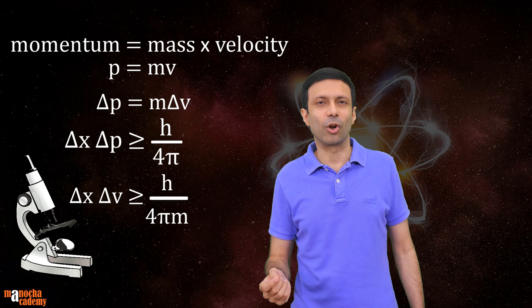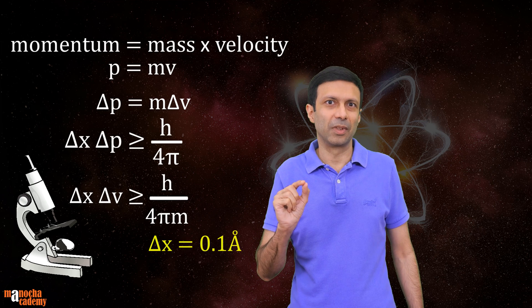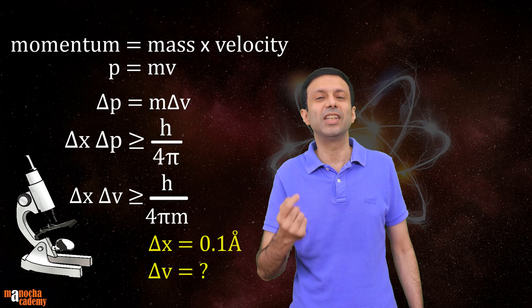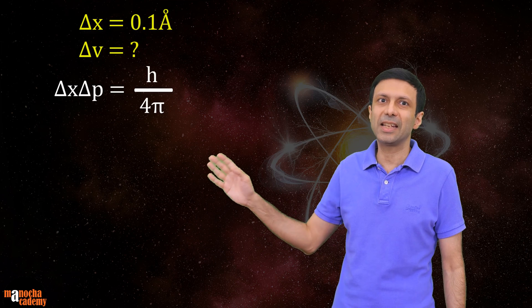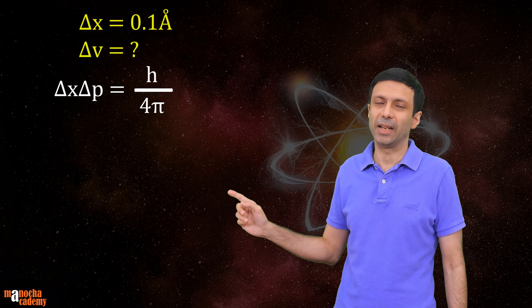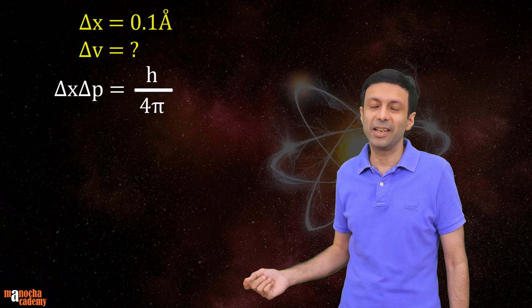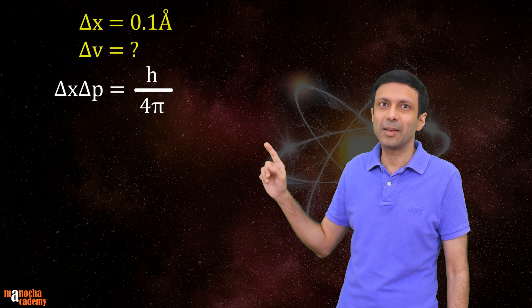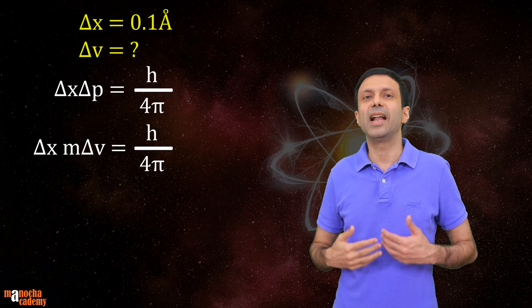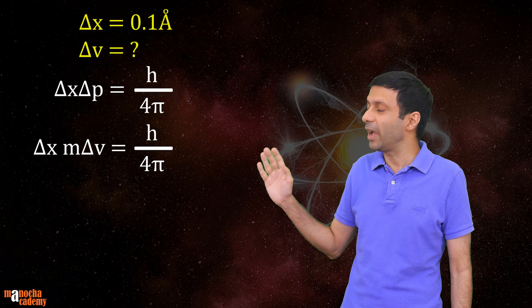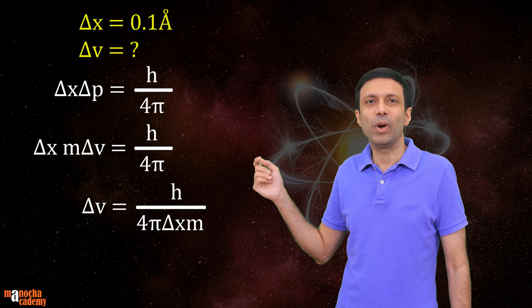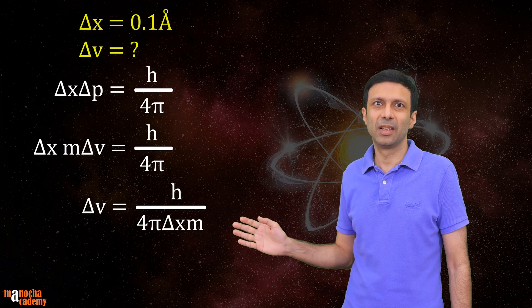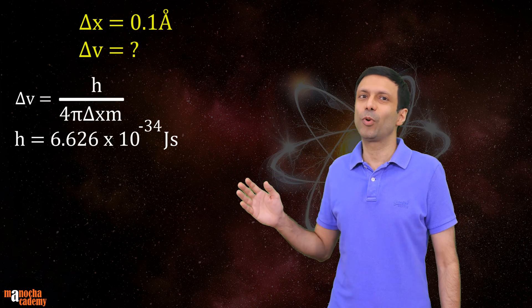Let's take an example. A microscope is able to locate an electron within a distance of 0.1 angstrom. What is the uncertainty in the measurement of this electron's velocity? We start with Heisenberg's uncertainty principle: delta x times delta p equals h by 4π. We take the equal sign because we are considering the minimum error. Replacing delta p with m times delta v, we get: delta x times m times delta v equals h by 4π.